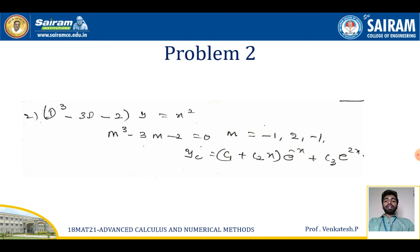Now consider a second example on polynomials: (D³ - 3D - 2)y = x², where x² is a polynomial. Forming the auxiliary equation m³ - 3m - 2 = 0, the roots are m = -1, -1, and 2. Since -1 is a repeated root, the complementary function is (c1 + c2x)e^(-x), and since 2 is a distinct real root, we add c3·e^(2x).